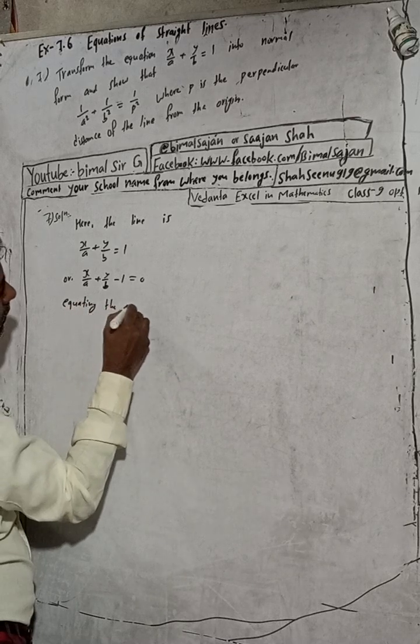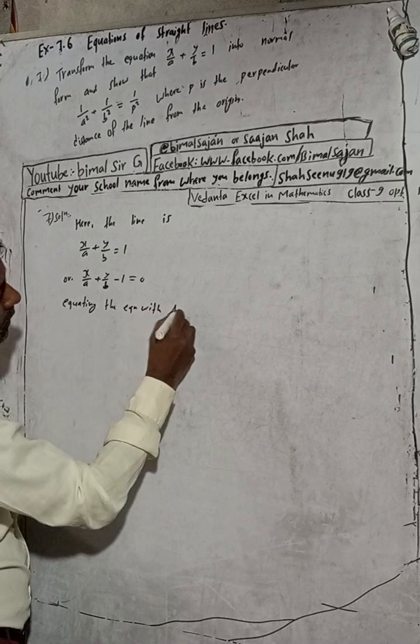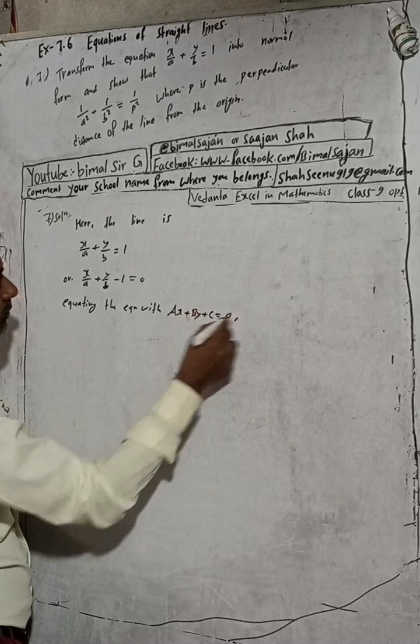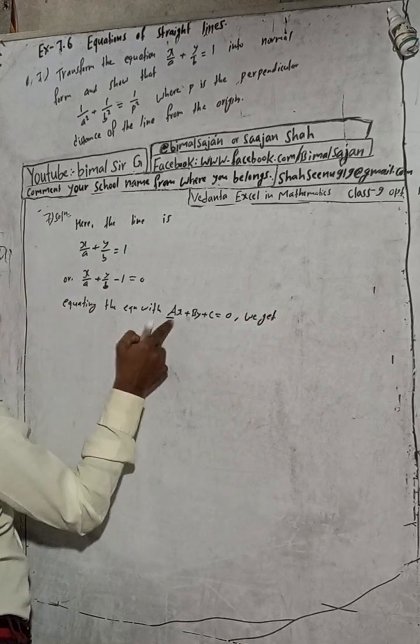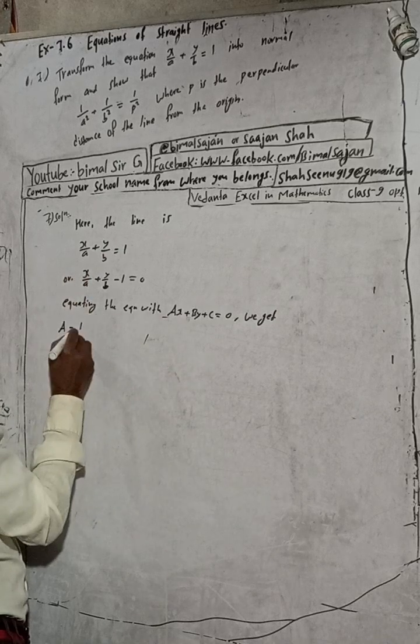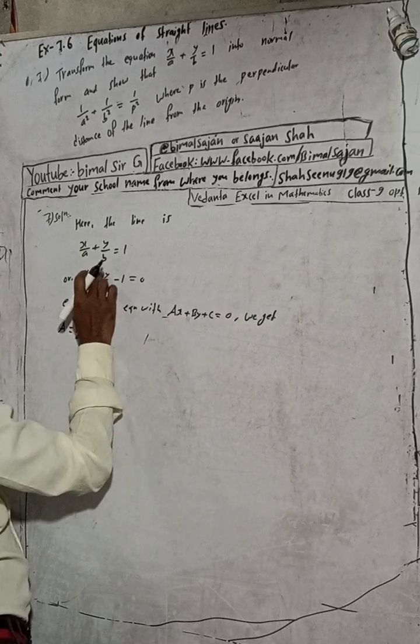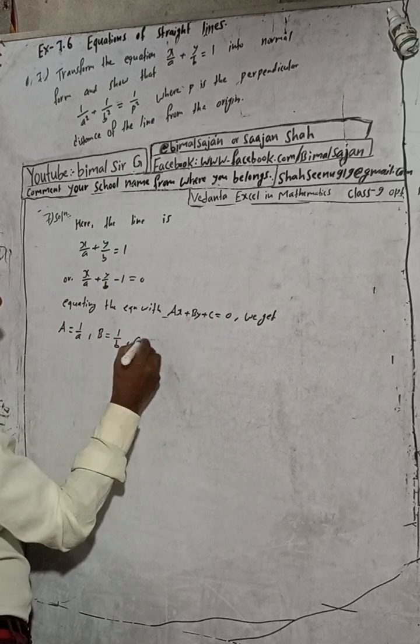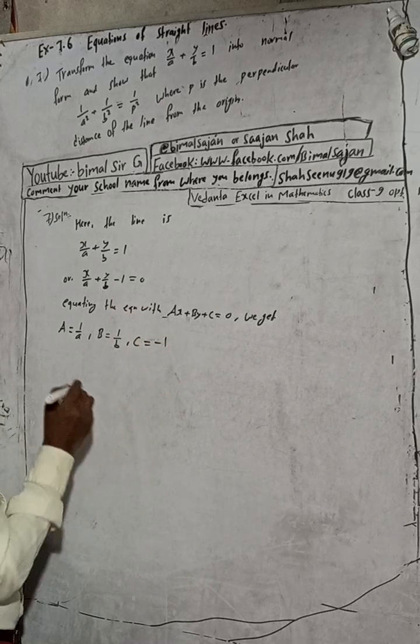Equating the equation with ax plus by plus c equals 0. So we get in place of a, this is x, so in place of a what is there? 1/a. And in place of this b, so this is y, so y coefficient means what? 1/b.